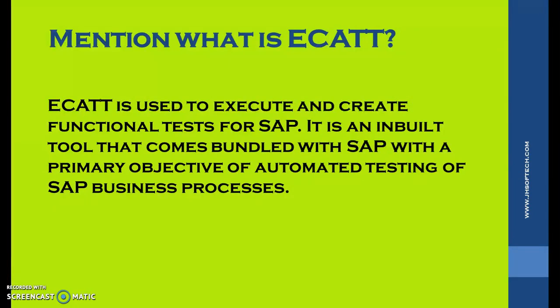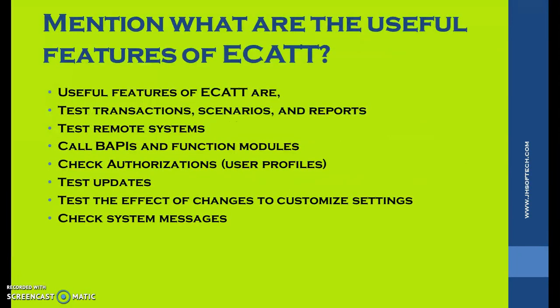ECAT is used to execute and create functional tests for SAP. It is a built-in tool bundled with SAP, with the primary objective of automated testing of SAP business processes. Useful features of ECAT include: testing transactions, scenarios, and reports; testing remote systems; calling BAPIs and function modules easily; checking authorizations; testing updates; testing the effect of changes to customization settings; and checking system messages.